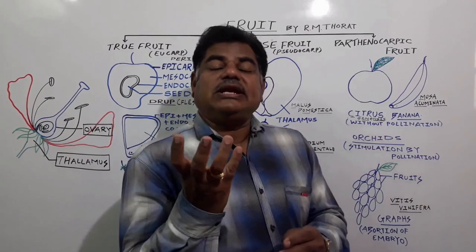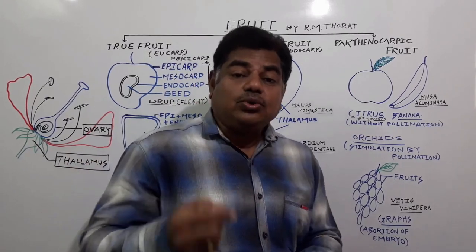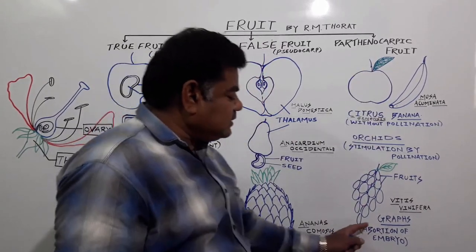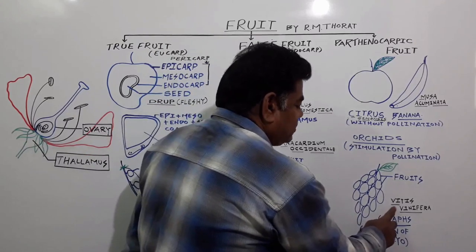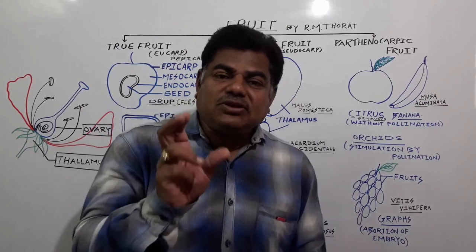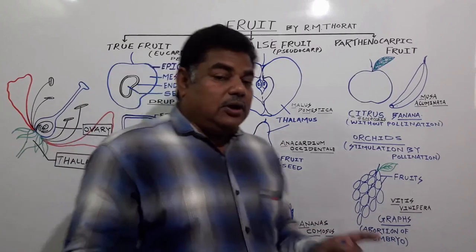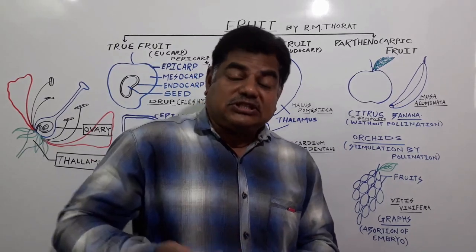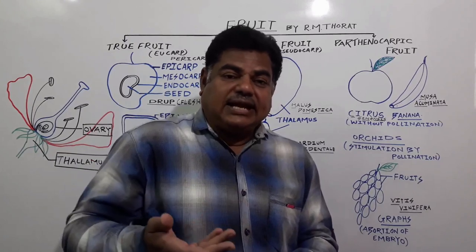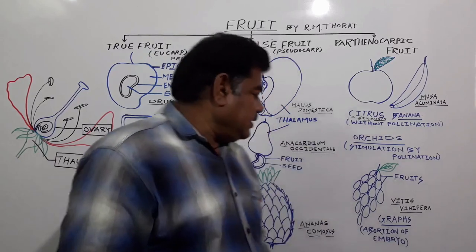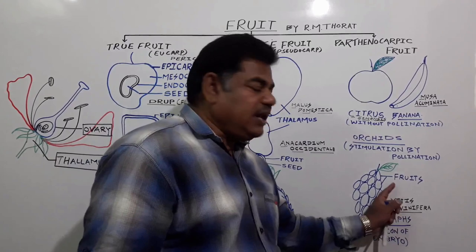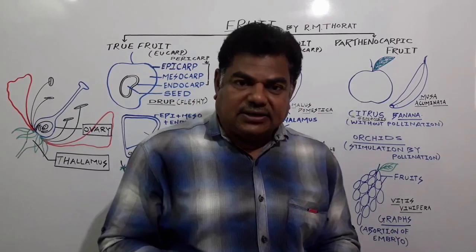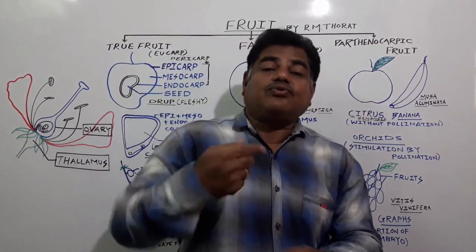Due to the stimulation of pollination, the ovary ripens without fertilization in the case of orchids. Third type: in the case of grapes — Vitis vinifera — pollination and fertilization take place, but when embryo formation starts, the embryo gets aborted. In the case of Vitis vinifera — angur — the seeds present have no embryo inside. Such fruits are also called parthenocarpic fruits.